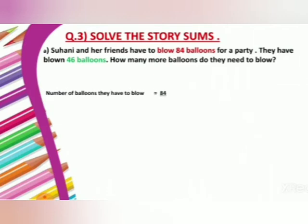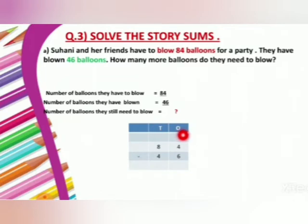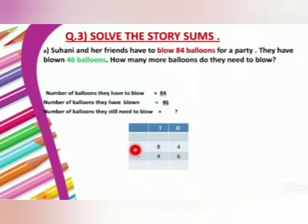Number of balloons they have to blow — total number of balloons is 84. Number of balloons they have blown is 46. Number of balloons they still need to blow is what we have to find. We will write in a table column with tens and ones. First number is 84, so 8 tens and 4 ones. Second number is 46, so 4 tens and 6 ones. We have to use the sign of subtraction, that is minus.